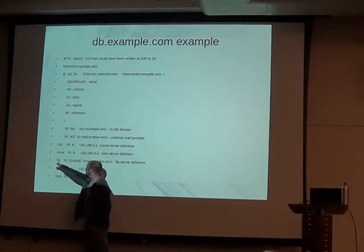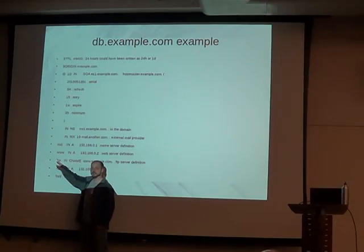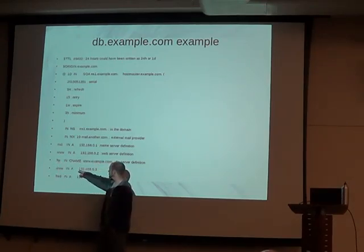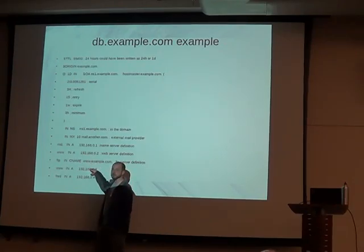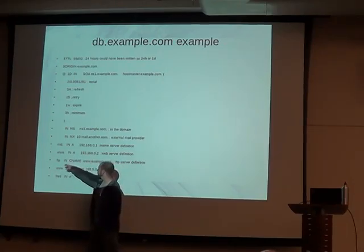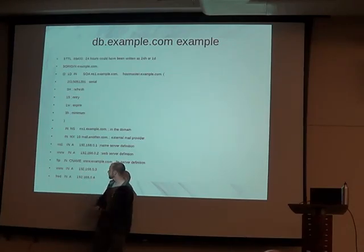Here we have FTP set up as a CNAME against www. So when you look up the FTP IP address, you will actually get one of these two IP addresses, and that will round robin as well, because it's just converting that to a www and then doing a lookup on that.